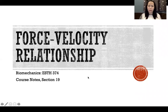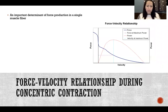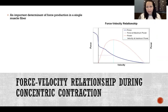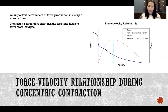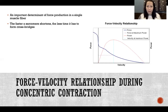In this video I'm going to talk about the force-velocity relationship. The force-velocity relationship is different between concentric and eccentric contractions. I'm going to start by discussing what this relationship means during a concentric contraction. This relationship is very important in determining the amount of force that a single muscle fiber is able to produce — basically, how much force the fiber can produce depends on how quickly the fiber shortens or how fast the fiber contracted.